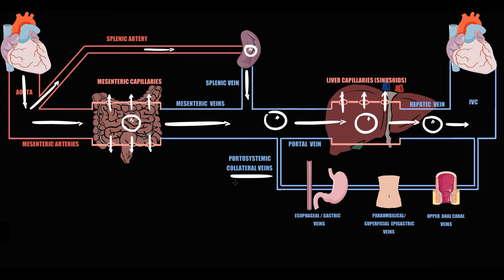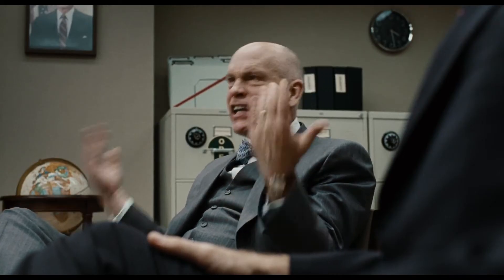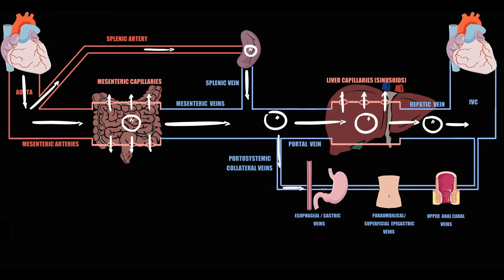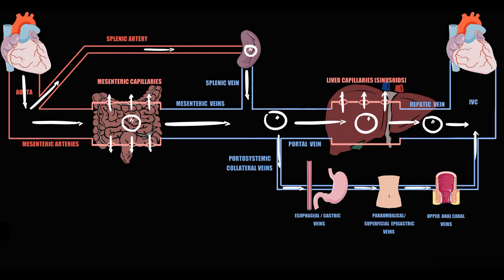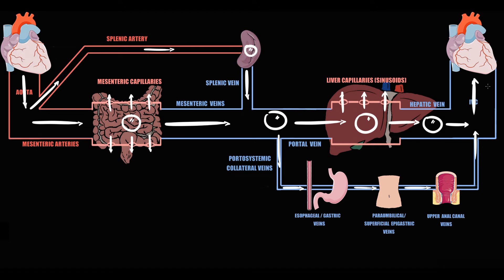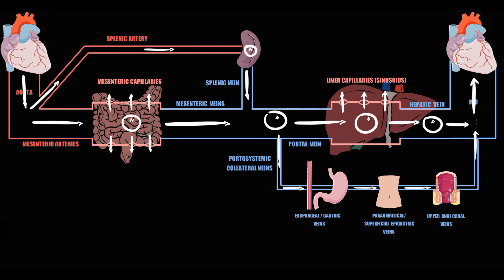We also have to know that this system contains additional vessels remaining from embryogenesis, called portosystemic collateral blood vessels. During embryogenesis these vessels were crucial — they provided flow to esophageal and gastric veins, to paraumbilical and superficial epigastric veins on the anterior abdominal wall, and to upper anal canal veins, all draining into the inferior vena cava. An adult in normal conditions practically does not use portosystemic collateral vessels, because the portal vein provides flow of a large amount of blood. Blood from the inferior vena cava goes into the right atrium, through pulmonary circulation, to the left ventricle, and the cycle repeats.